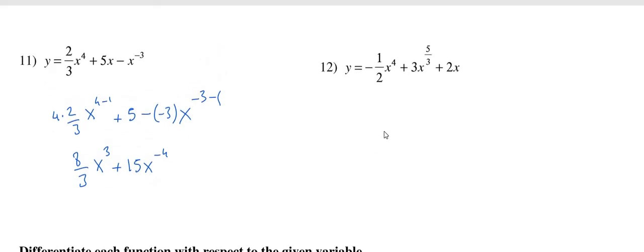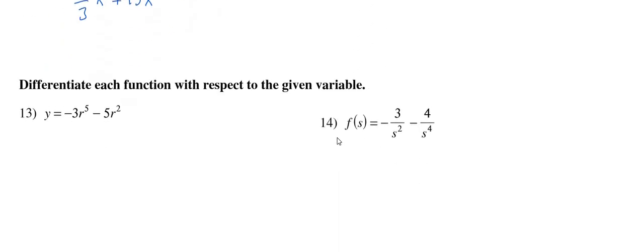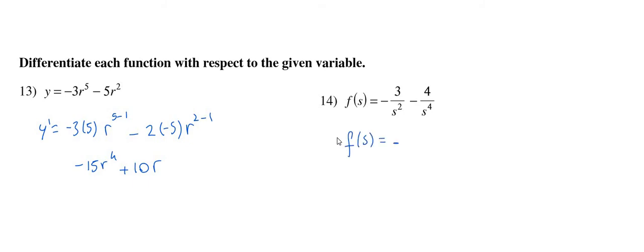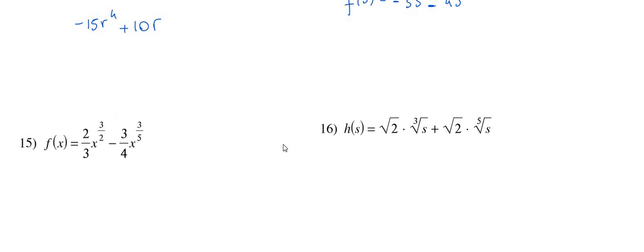Differentiate each function with respect to the given variable. Example 13 is again power rule: y prime is negative 3 times 5r to the 5 minus 1, giving negative 15r to the fourth, plus negative 2 times negative 5r to the 2 minus 1, which gives plus 10r. Example 14: rewrite 3 over s squared as 3 times s to the negative 2, minus 4 times s to the negative 4, then apply the power rule. For fractional powers, bring to the front and subtract 1, expressing 1 as the appropriate fraction.